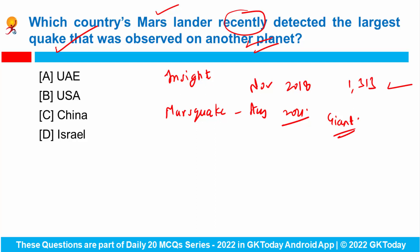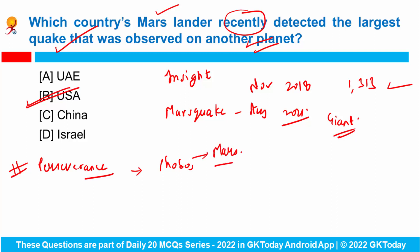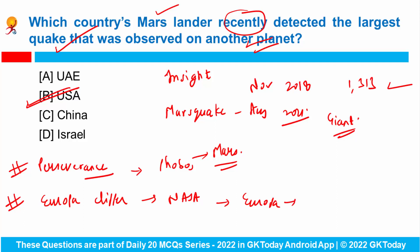As per NASA, Mars quakes are caused due to the stress that causes rock fracture on its crust. The correct answer is USA because it is NASA. Also, NASA's Perseverance Mars rover captured a video of an eclipse on Phobos, which is one of the two moons of Mars. The Europa Clipper mission, also known as the Europa Multiple Flyby Mission, is an interplanetary mission being developed by NASA to study Jupiter's moon Europa, and it is scheduled to launch in October 2024. NASA has also selected two science missions — MUSE and Helioswarm — for understanding the dynamics of the sun and sun-Earth connection.